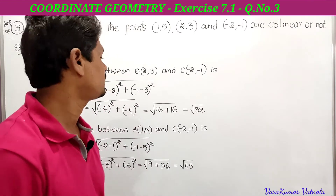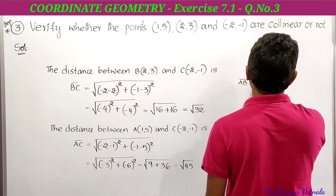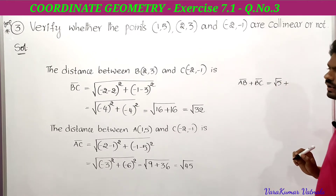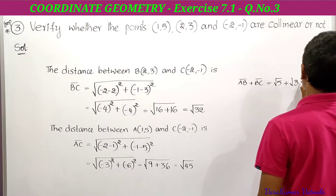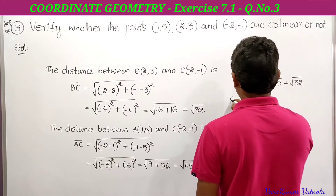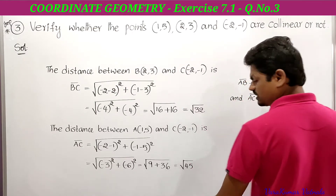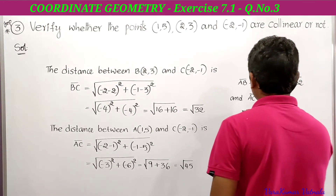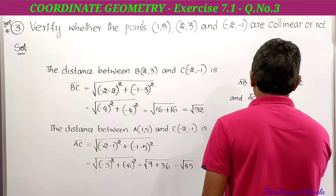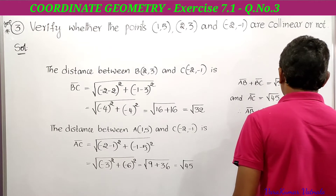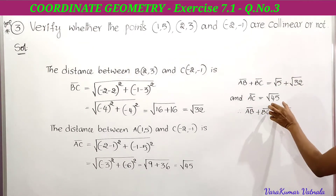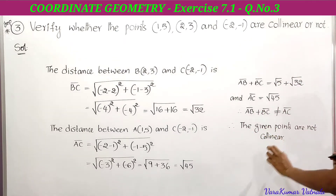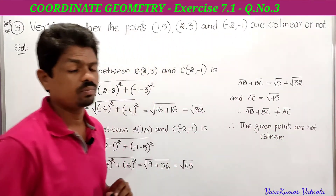Now, AB = √5, BC = √32, and AC = √45. Clearly, AB + BC is not equal to AC. Therefore, the given points are not collinear.